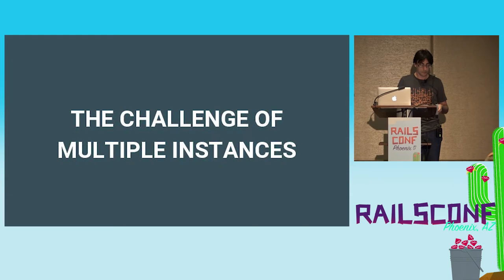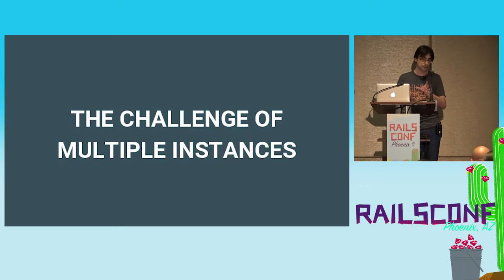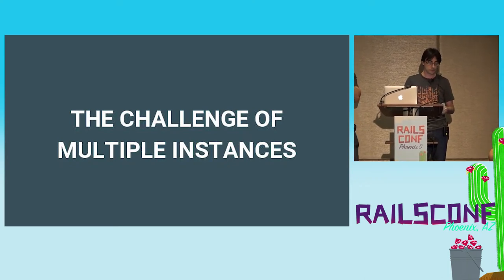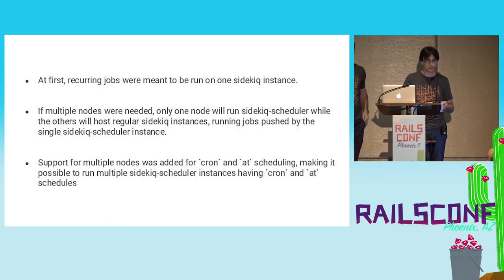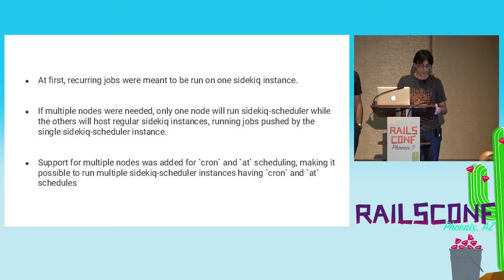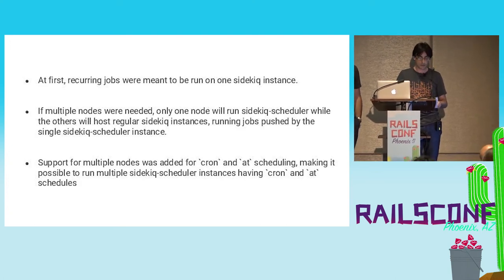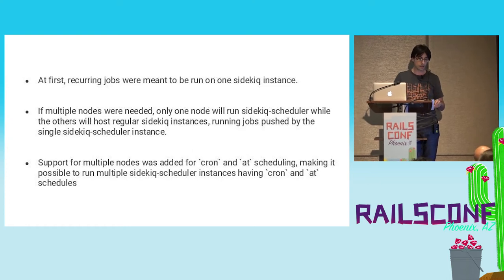While implementing this approach, we stumbled upon the challenge of managing multiple running instances at the same time. At first, recurring jobs were meant to be run on one Sidekick instance only. If multiple nodes were needed, only one node would run Sidekick Scheduler while the others would host regular Sidekick instances running jobs pushed by the single scheduler. Support for multiple nodes was added later for cron and 'at' schedule types. So right now it's possible to run multiple Sidekick Scheduler instances having cron and 'at' jobs not run as duplicates.